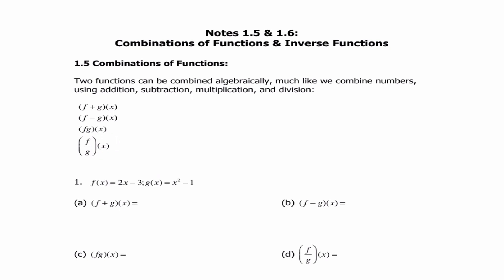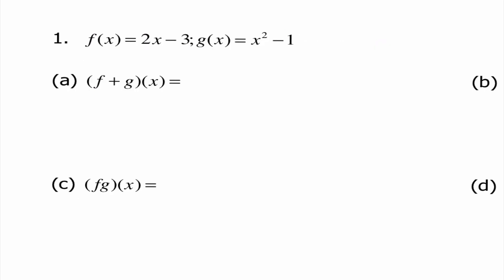Let's go ahead and look at problem number one. Number one tells us f of x is 2x minus 3, and g of x is x squared minus 1. For part a, they're telling us to add these two functions together. So I'm going to go ahead and say 2x minus 3 plus x squared minus 1. It's important that I use those parentheses because often if we have a negative or something else going on, it will affect our overall answer.